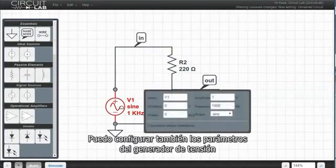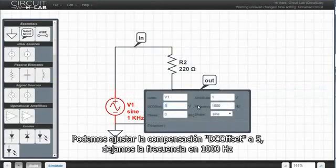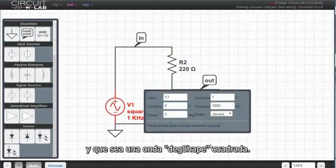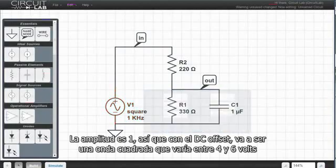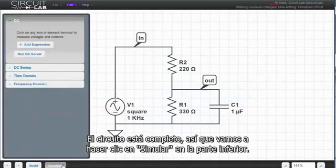I can set up the voltage function generator's parameters too. We can set the DC offset to 5, leave the frequency at 1000 Hz, and make it a square wave. The amplitude is 1, so with the DC offset, it's going to be a square wave changing between 4 and 6 volts. The circuit's done, so let's click simulate here at the bottom.